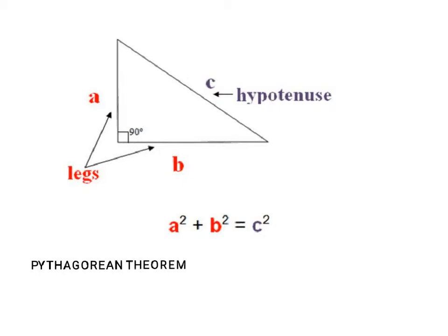For every question in this section, we are going to be using Pythagorean Theorem. Pythagorean Theorem is commonly known as A squared plus B squared equals C squared. The A and B represent the lengths of the legs of a right triangle. This only works for a right triangle — if you don't have one angle that's 90 degrees, you can't use Pythagorean Theorem. The legs are always the sides that are touching that right angle, that make the right angle.